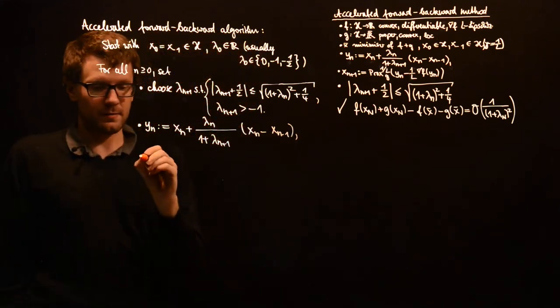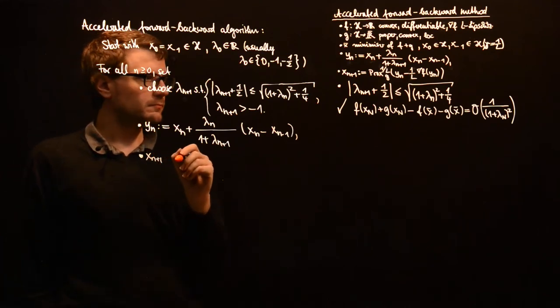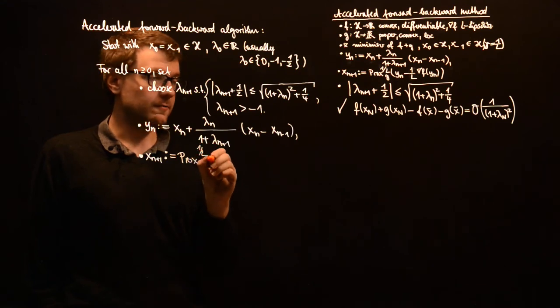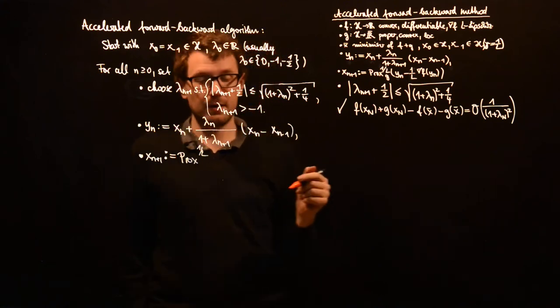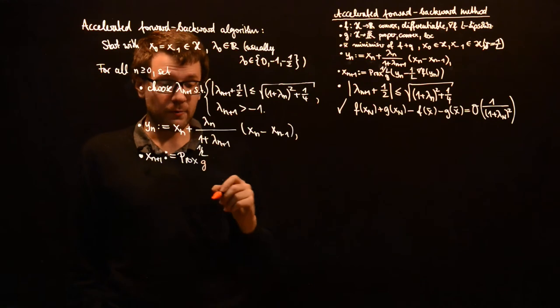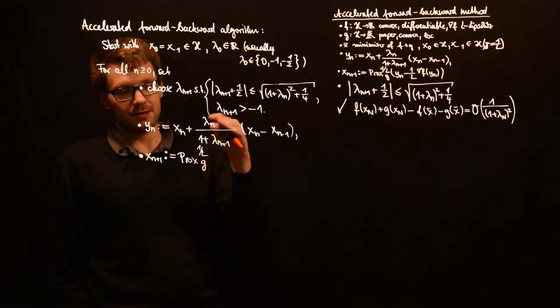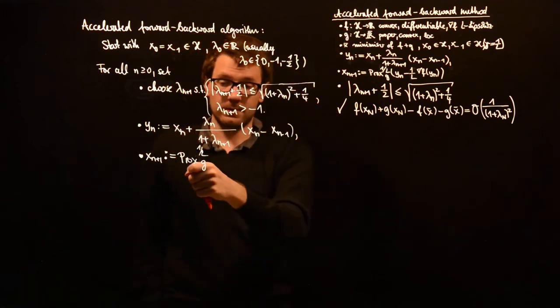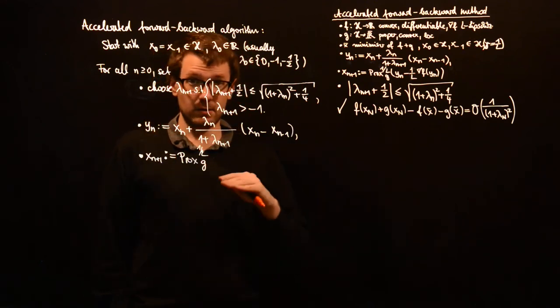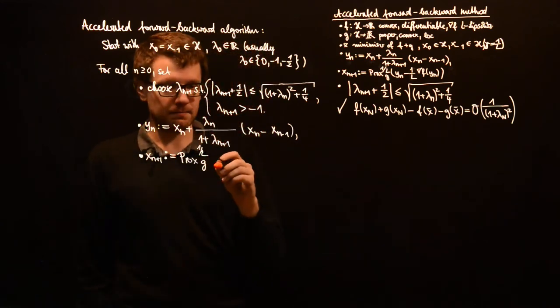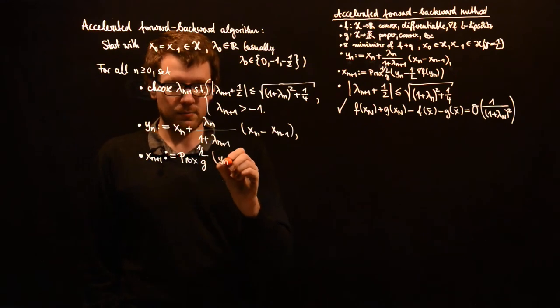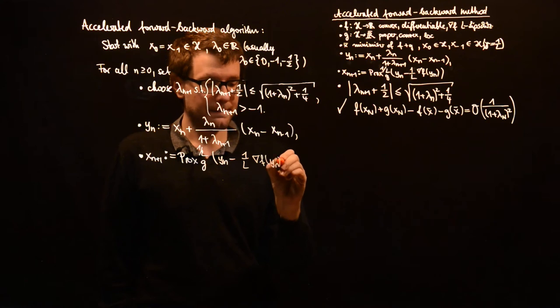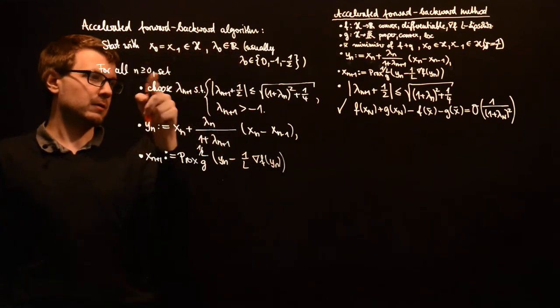And then you set x_{n+1} as the proximal point with the step size 1 over L, where L is the Lipschitz constant of the gradient of f. And we have discussed why we want that. Hopefully you know the Lipschitz constant. Otherwise you have to estimate. I mean it's not the Lipschitz constant, it's just one Lipschitz constant. And if you take a bigger number L, then you will still have a Lipschitz constant which you can plug in here. As long as you know one Lipschitz constant, that's always a requirement here. And then you can take y_n, we have just calculated that, minus 1 over L gradient of f at y_n.